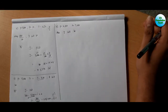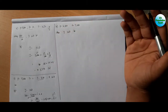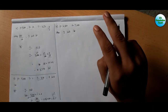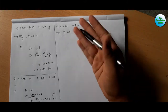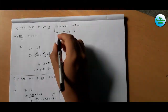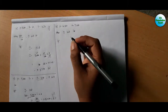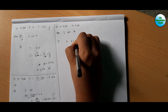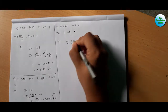For the fourth sum: P = 4,500 and A = 7,200. We need to find I. The accumulated amount formula is A = P + I. Using the formula: A is the accumulated amount.